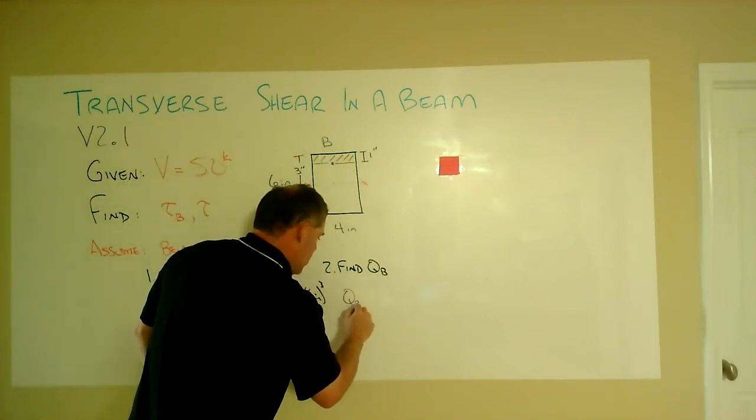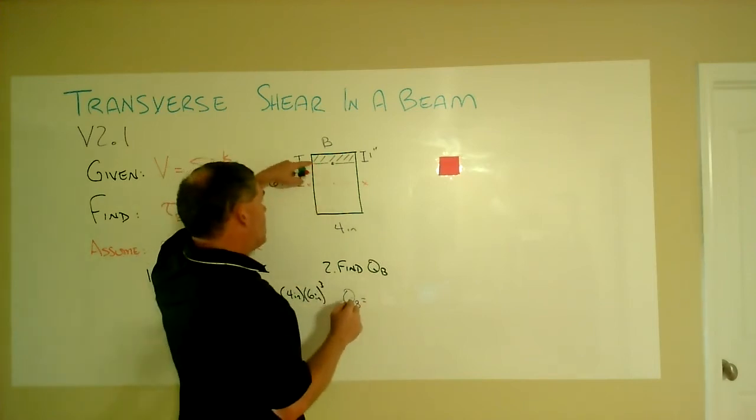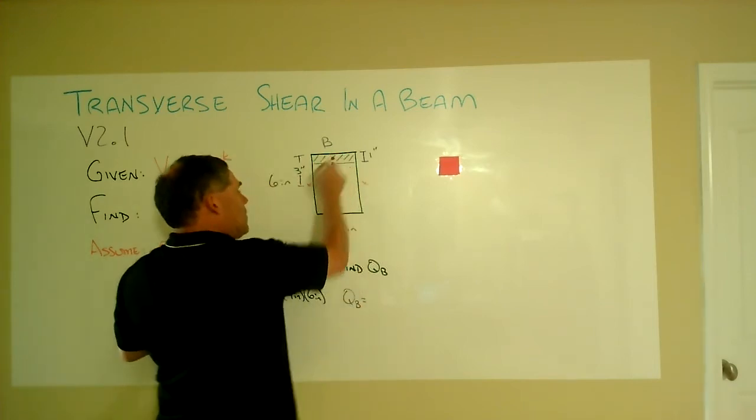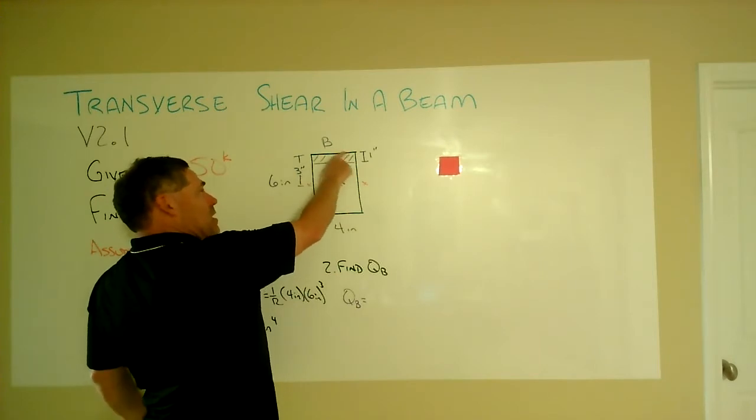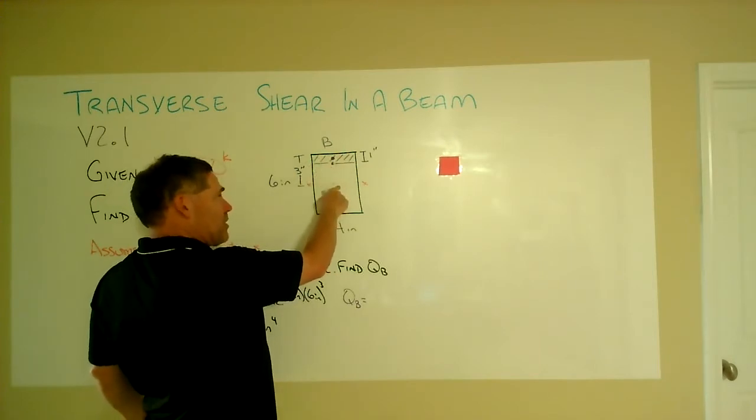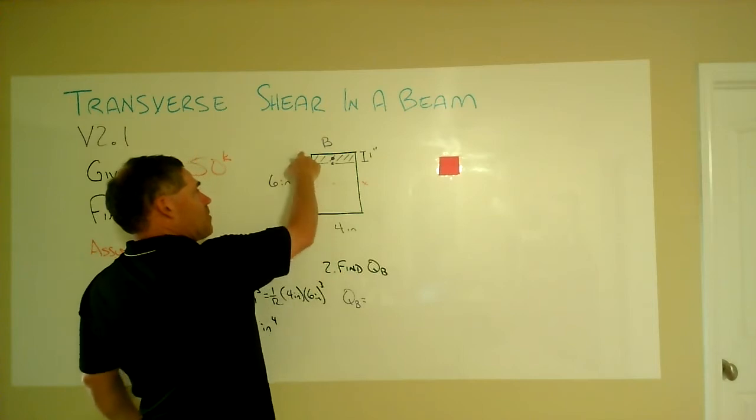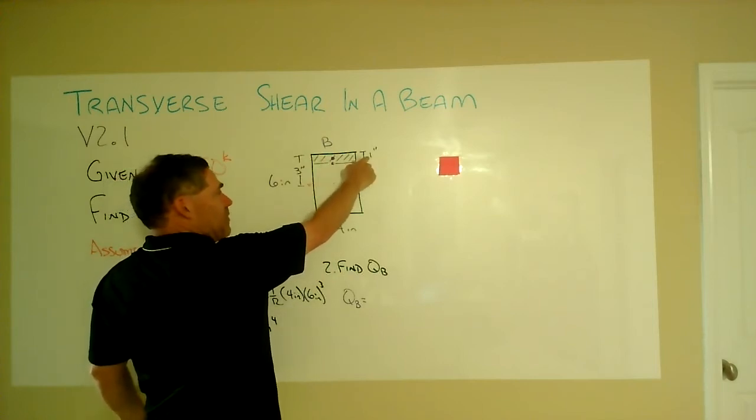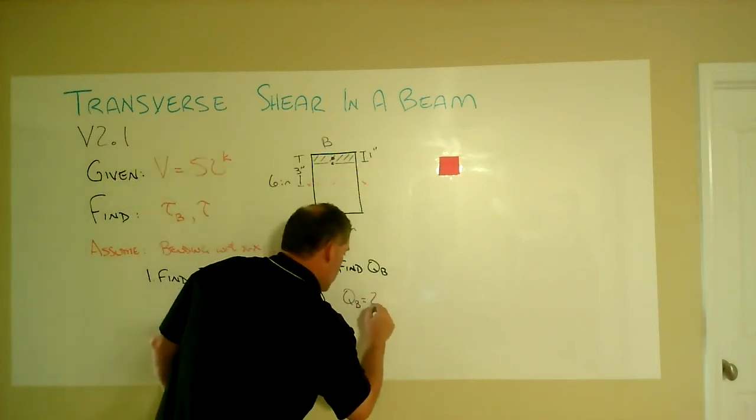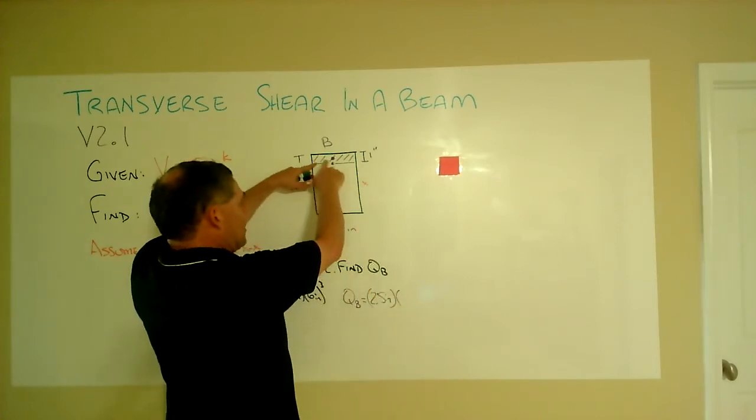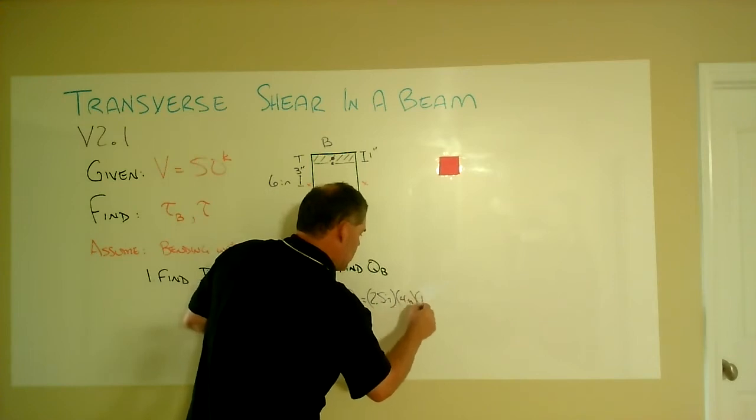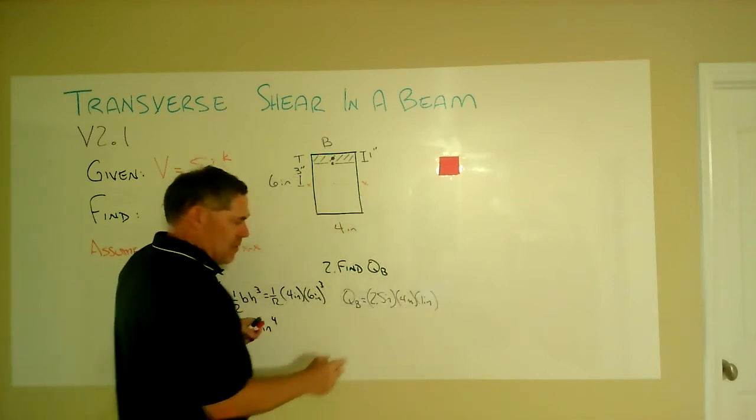And so that Q_B is going to be then that moment arm, the centroidal distance of that rectangle to the neutral axis is going to be three minus half of the one, so two and a half inches, times this area, which is four inches wide times one inch high.